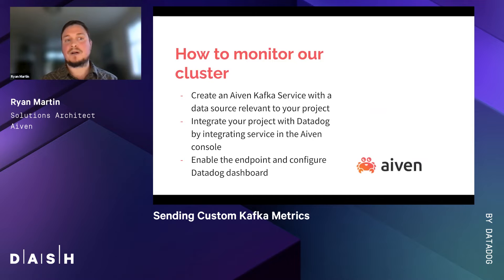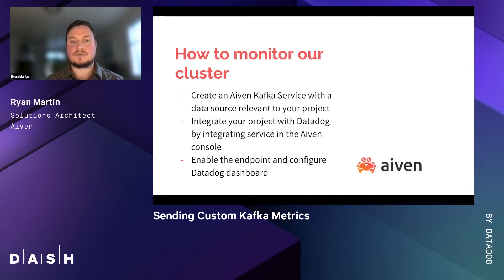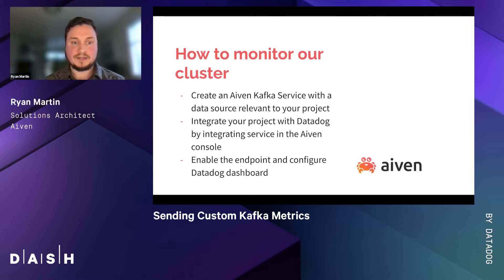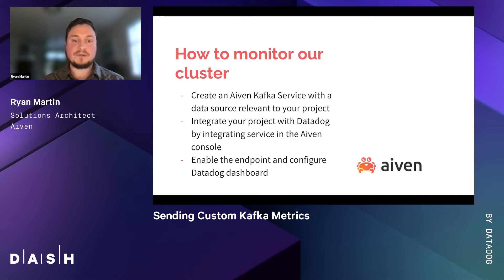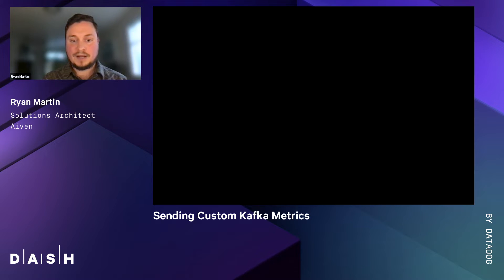So how do we monitor our Kafka cluster? First, we create an IVAN Kafka service with a data source relevant to our project — in our case, it will be a Python script. Then we integrate our project with Datadog by integrating our service in the IVAN console. And then we enable the endpoint and configure the Datadog dashboard.